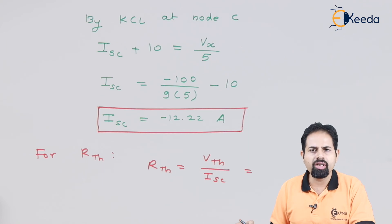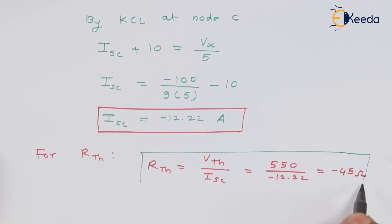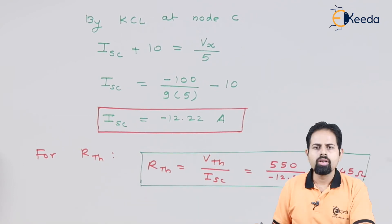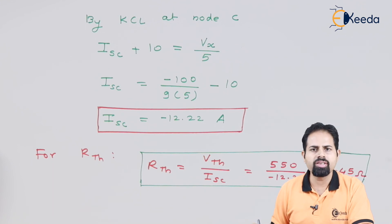This is the formula of Rth. Let us substitute the values of Vth as well as ISC. So Rth you have got as minus 45 ohms. Sometimes resistance can be negative. That means if voltage is increasing, current is decreasing. And now the last step is drawing the equivalent circuit.